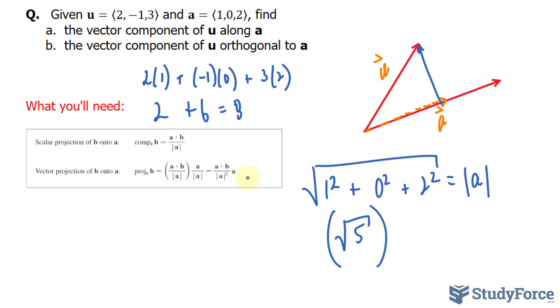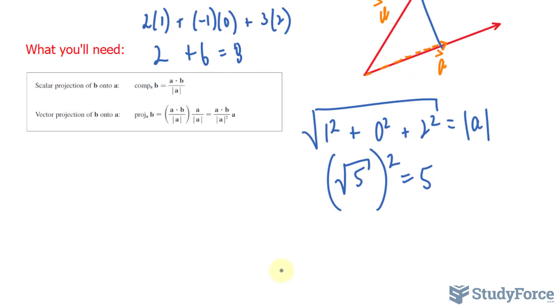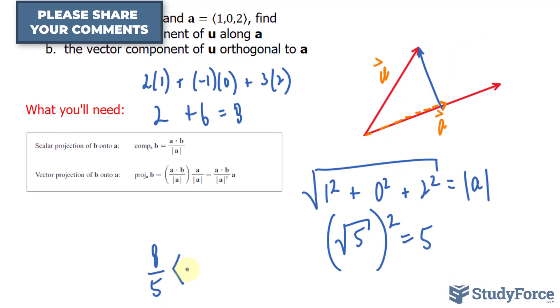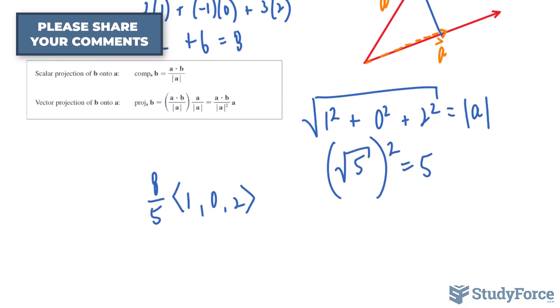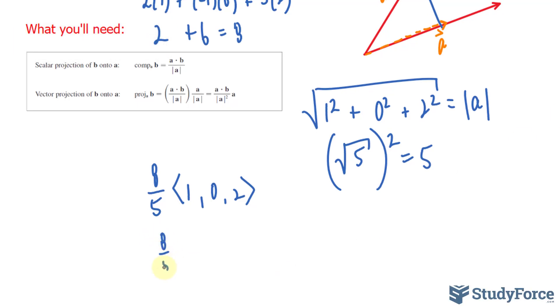We'll square this because the formula prompts us to, and that gives us 5. So, so far we have the top, the bottom, and we have this vector a. So technically we have 8 over 5 being multiplied to the vector 1, 0, and 2. This gives us 8 over 5, 0, and 16 over 5.